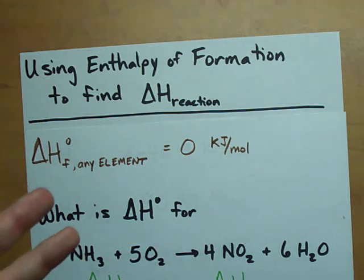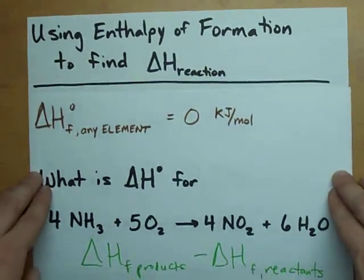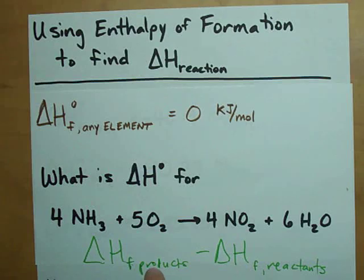But how can you actually find the delta H from those delta HFs? Well, the formula is that all you need to do is add up all the delta HFs for your products and subtract all the delta HFs for your reactants.